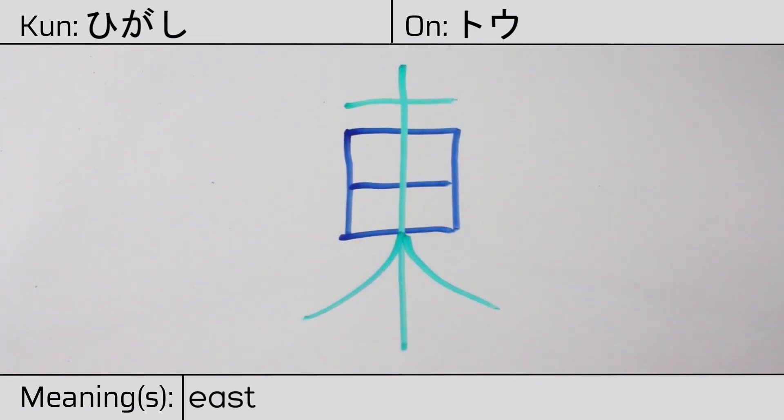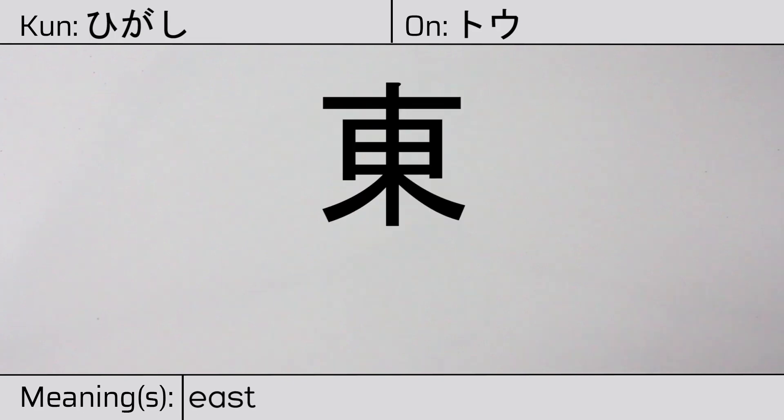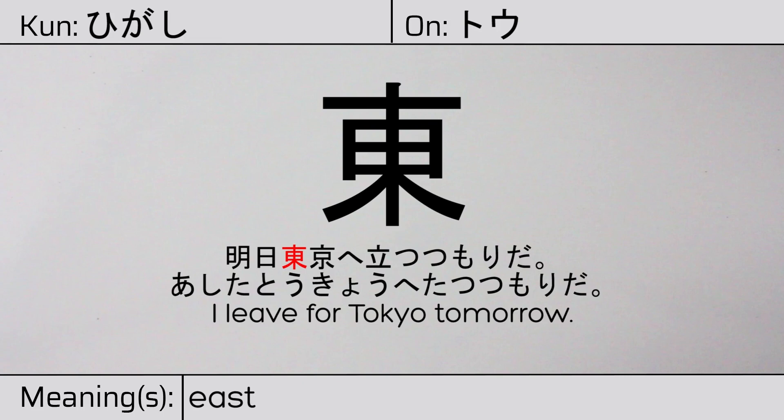You can remember this kanji by the following hint: sun rising behind the trees from the east. Our example sentence is: Ashita tokyo he tatu tsumori da — I leave for Tokyo tomorrow.